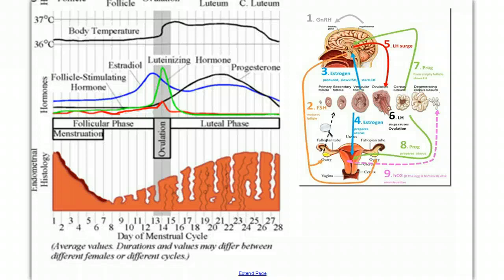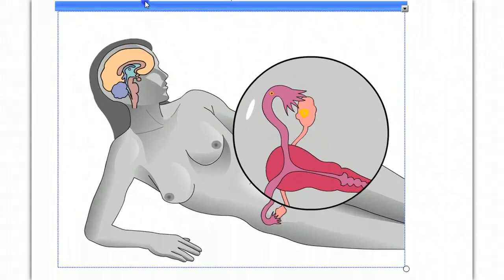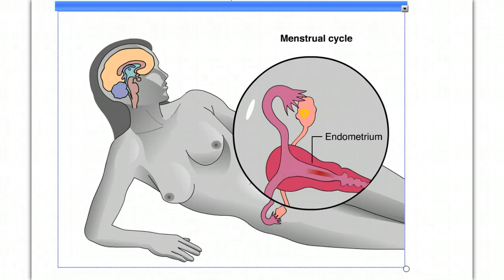Blood, cells, and mucus are expelled through the vagina. Ovulation occurs about every 28 days in a regular cycle called the ovarian cycle. Hormones coordinate the ovarian cycle with monthly changes in the uterus, termed the menstrual cycle. The start of the menstrual cycle is defined by the beginning of a woman's menstrual period. The lining of the uterus, called the endometrium, breaks down, and blood, cells, and mucus are expelled through the vagina. This process is called menstruation, and it usually lasts for the first three to five days of the menstrual cycle.